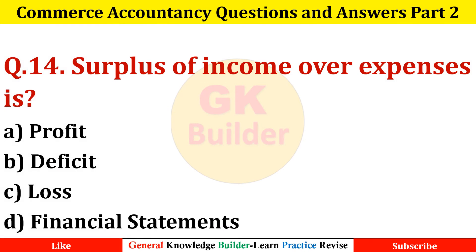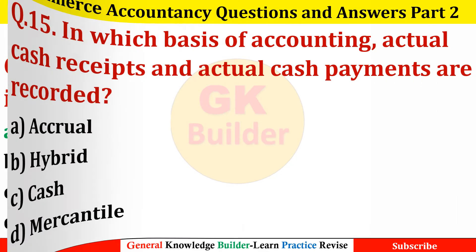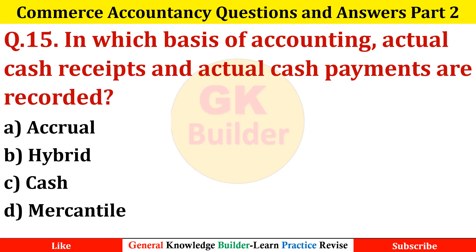Now let us learn objectives. Question 14: Surplus of income over expenses is — Option A: Profit. Question 15: In which basis of accounting are actual cash receipts and actual cash payments recorded? — Option C: Cash basis.